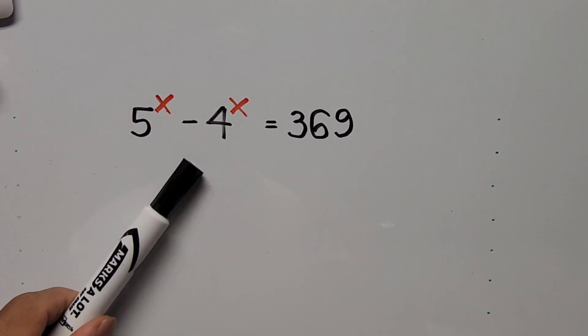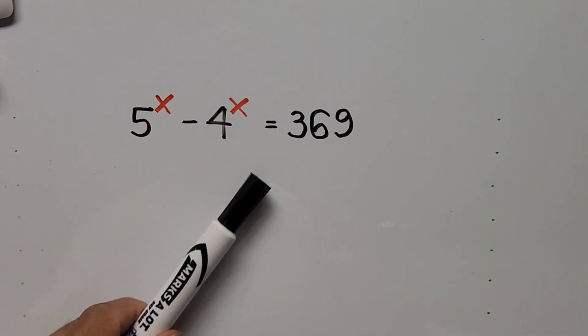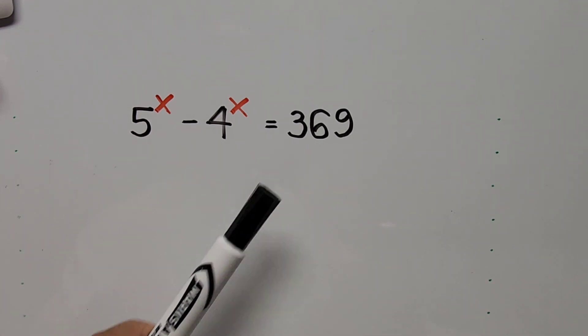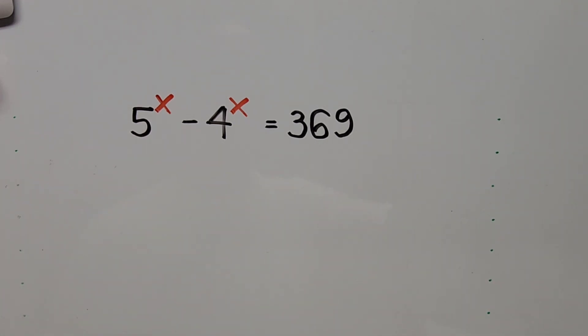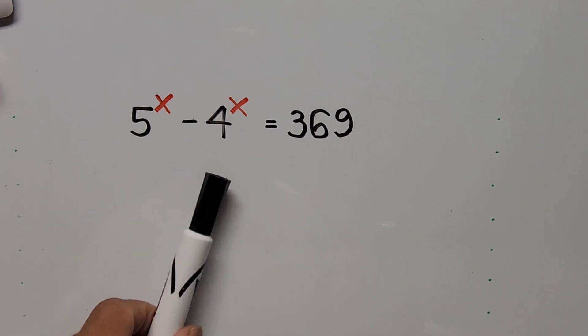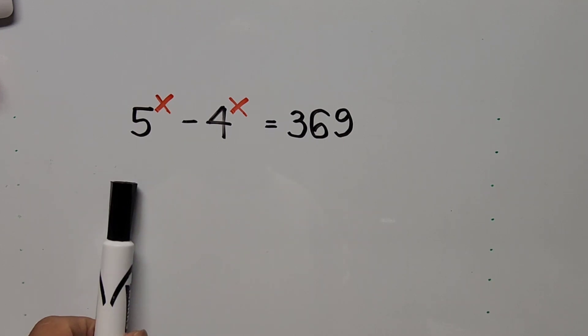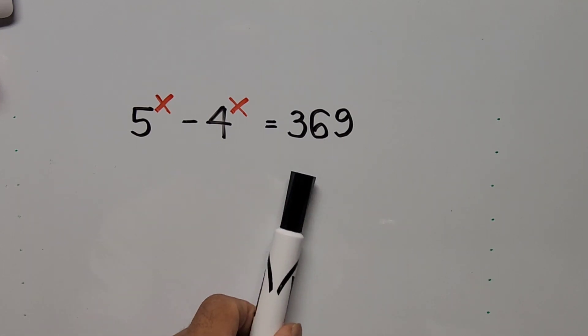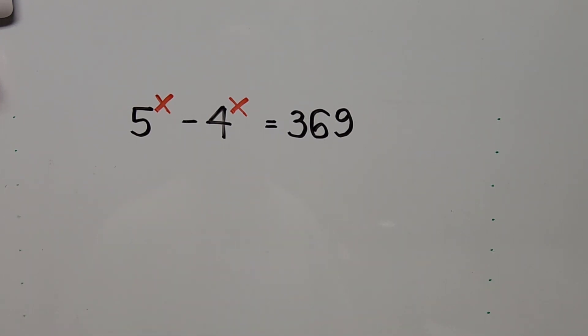So now let's start. We have this equation: 5 to the power of x minus 4 to the power of x is equal to 369. So how do we solve this equation? If we square the left side of the equation, we must square the right hand side of the equation as well.